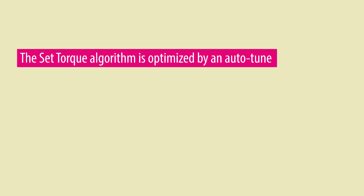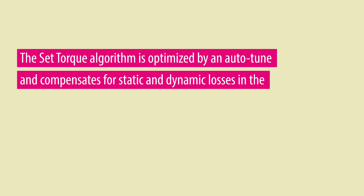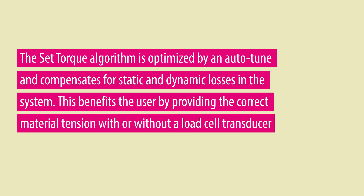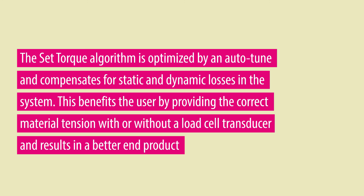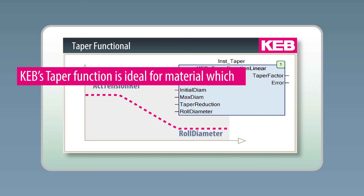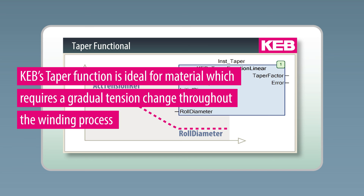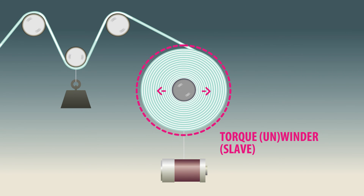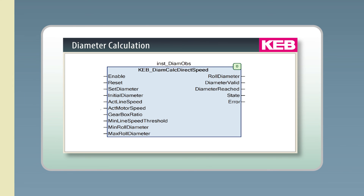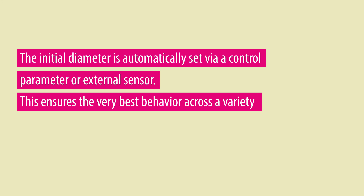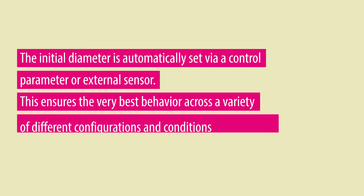The set torque algorithm is optimized by an auto-tune and compensates for static and dynamic losses in the system. This benefits the user by providing the correct material tension with or without a load cell transducer, resulting in a better end product. KEB's taper function is ideal for material which requires a gradual tension change throughout the winding process. The initial diameter is automatically set via a control parameter or external sensor, ensuring the very best behavior across a variety of different configurations and conditions.